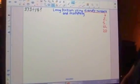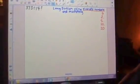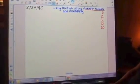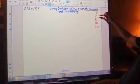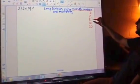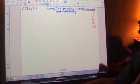All right, so today we're going to learn how to do long division using friendly numbers and multiplying. We've already determined that some of our friendly numbers that we can easily multiply by is 2, 5, 10, and 20.